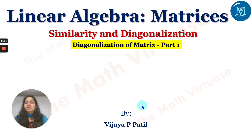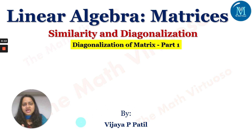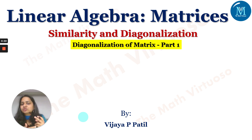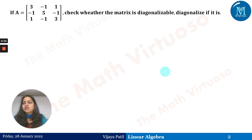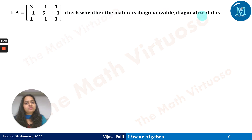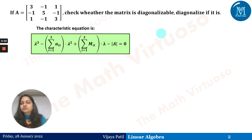Hello and namaste. In continuation with the topic of linear algebra matrices, we are dealing here with similarity and diagonalization. After detailed concepts of similarity, diagonalization, algebraic multiplicity, geometric multiplicity, and powers of A, we will be dealing with actual questions. I have divided the diagonalization of a matrix into different parts — this is the first part. If A is this 3×3 matrix, check whether the matrix is diagonalizable, and diagonalize it if it is. We have to find the eigenvalues and eigenvectors.